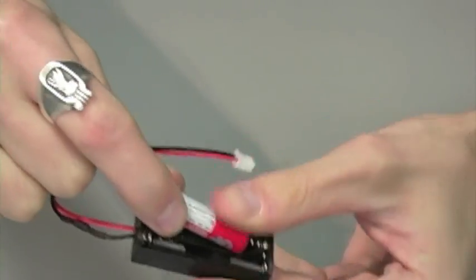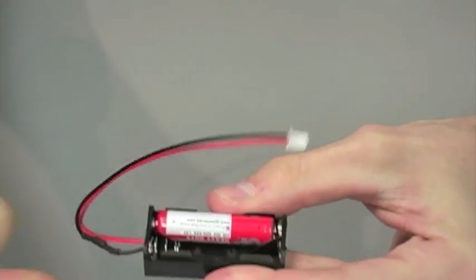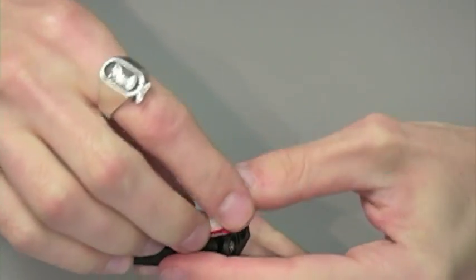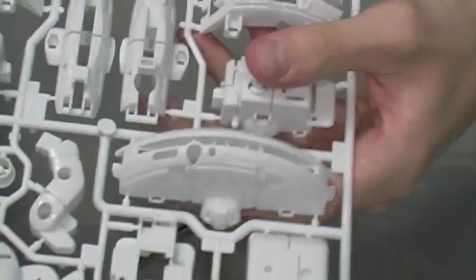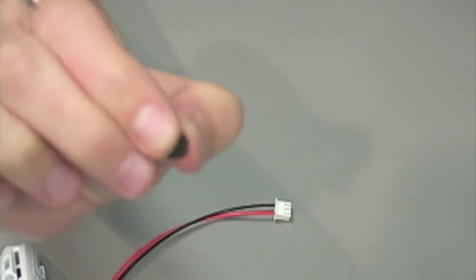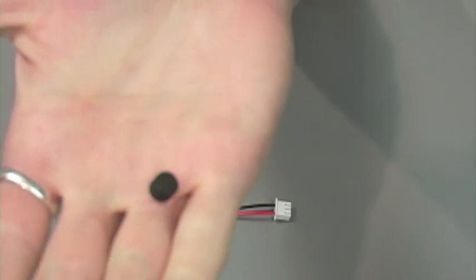Now we're going to assemble our battery module. Take your battery pack and go ahead and insert the two AAA batteries. Now find part B7. Now find part A7.